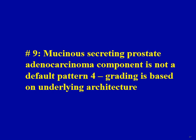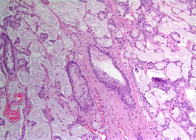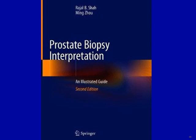The last pitfall: mucin-secreting prostate adenocarcinoma is not a default pattern 4 — its grading should be based on the underlying architecture. Most of the time these represent Gleason pattern 3, but there may be a component of cribriform pattern or fusion, as seen in this example, in which case I would consider this as Gleason score 3+4.